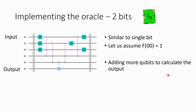So what do we need to do? We need to add more qubits to calculate the output — exactly one more qubit to calculate the output. Previously we had q0, q1; now we have q0, q1, q2 — one extra bit for input. Then we have two bits for the answer in one-bit implementation; over here we have three bits to calculate the answer.